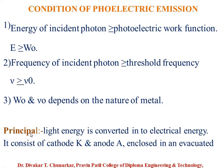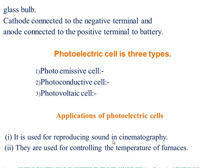The principle of the photoelectric cell is that light energy is converted into electrical energy. It consists of a cathode K and an anode A enclosed in an evacuated glass bulb. The cathode is connected to the negative terminal of the battery and the anode is connected to the positive terminal of the battery.